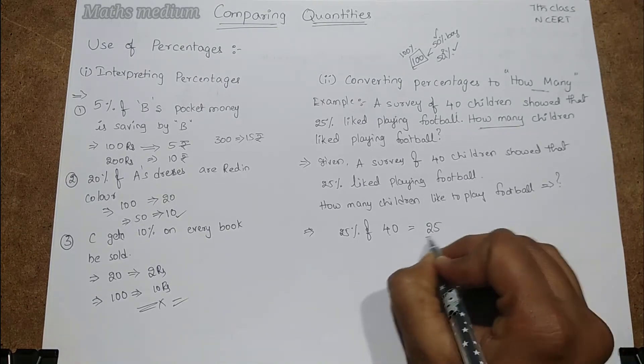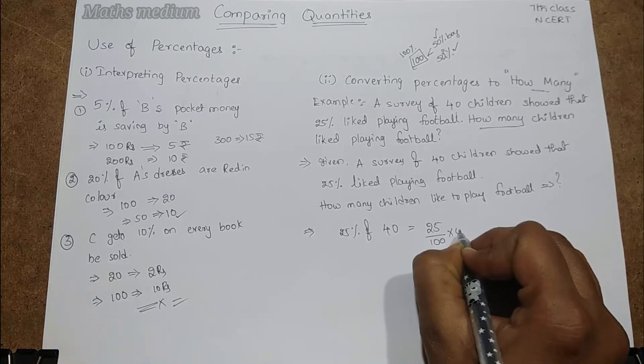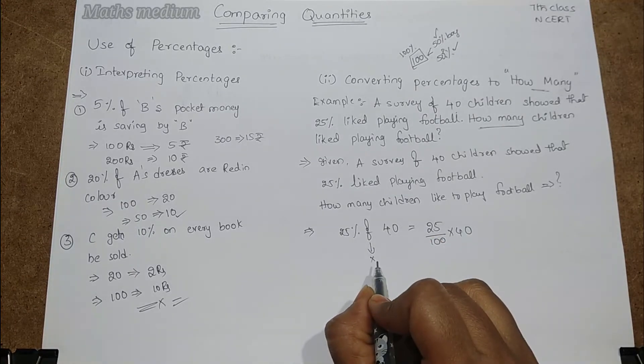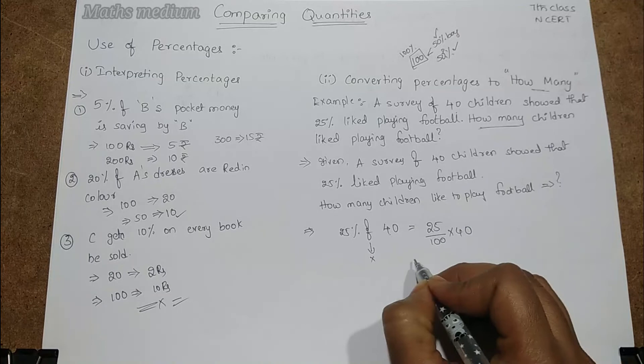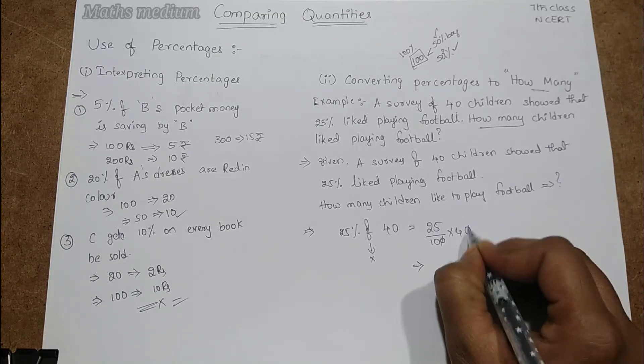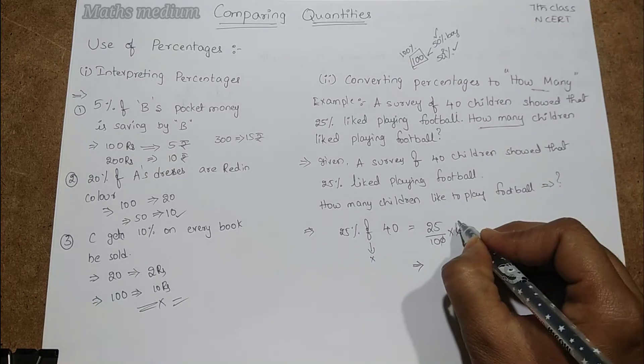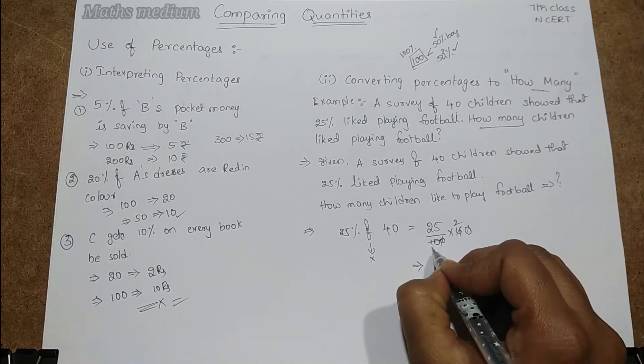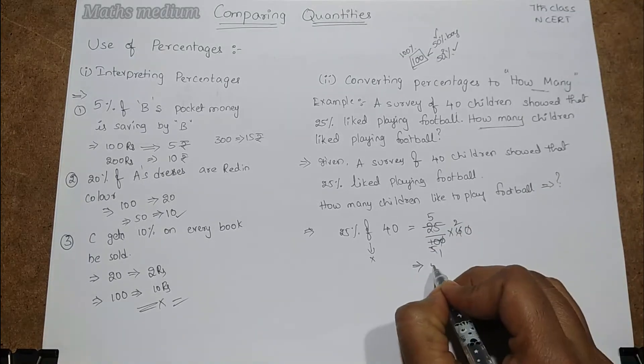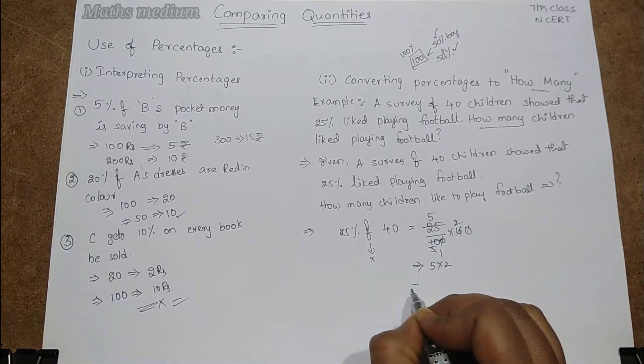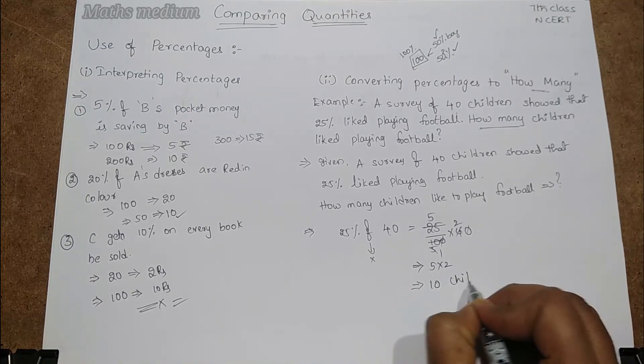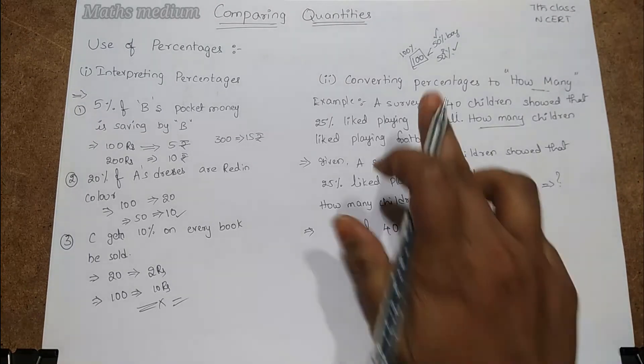Here 25 by 100 into 40. Here 'of' means into symbol. It means multiplication symbol. Now take the simplification step here. 0, 0 gets cancelled. 10, 2 2's are, 5 1's are, 5 into 2. It means 5 2's are 10 children are like to play football out of 40 children.